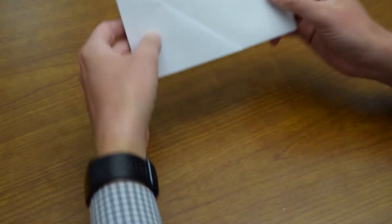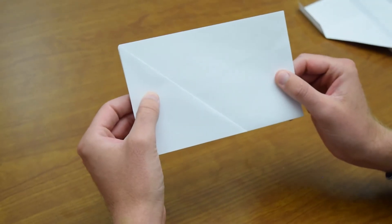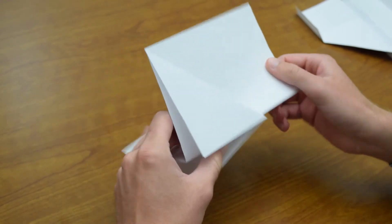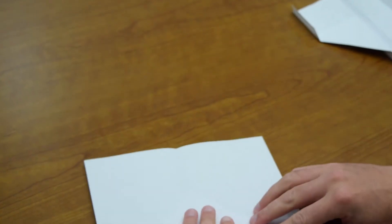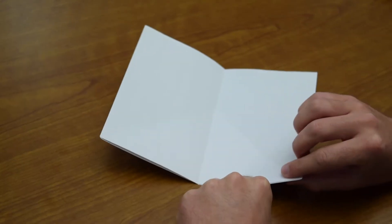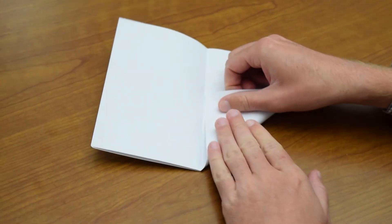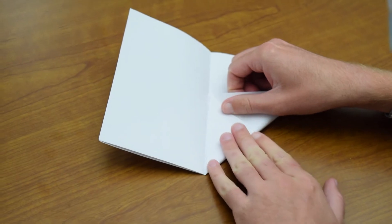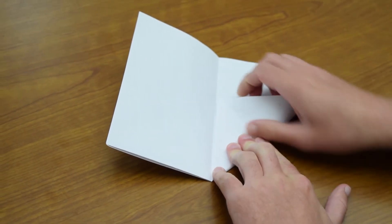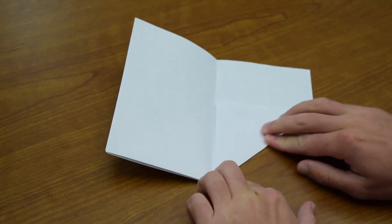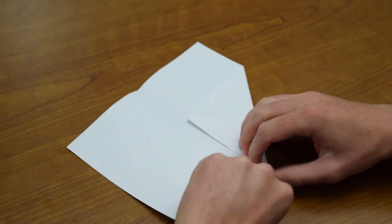We should have now a nice triangle right here, not a triangle, a rectangle, excuse me. Open it back up. Now we're going to do the same thing like we did earlier, we're going to fold these corners in right up to the crease. We're going to do the same thing again on the other side.